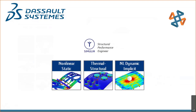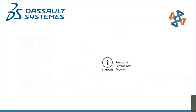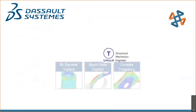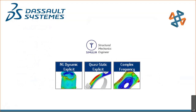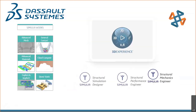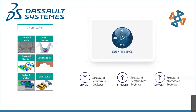Structural Mechanics Engineer contains everything the other two offerings have, but adds the non-linear dynamic explicit Abaqus solvers — so we're talking about really high deformation crash-type testing. Components can actually break, with fracture happening in the mesh itself. We also get quasi-static explicit analysis and complex frequency, which covers linear dynamics — inducing a force or vibration at a frequency and understanding the resulting stress, strain, and displacement.